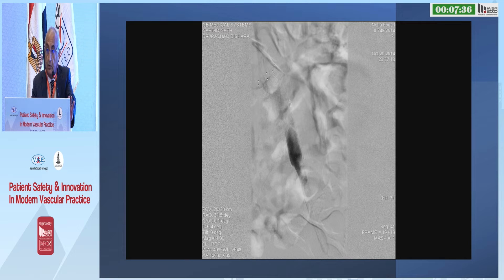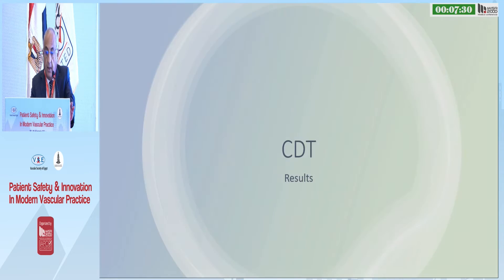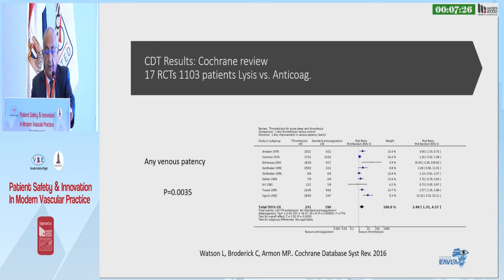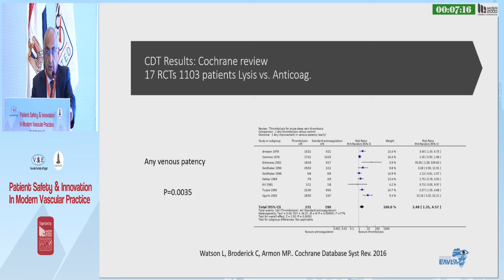It's an example of how durable this procedure can be if performed with the correct indication and properly. What are the results of catheter-directed thrombolysis? This is a meta-analysis which included 17 RCTs comparing thrombolysis versus anticoagulation, and it shows advantage toward thrombolytic therapy in terms of early venous patency.